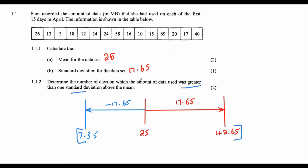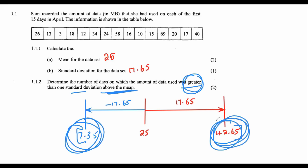They want to know on how many days was it larger than 42.65. So that would be this day over here, this day over here, and that's it. It's only going to be two. So the answer here is two days.